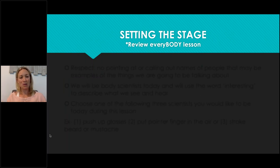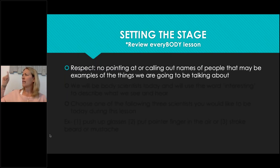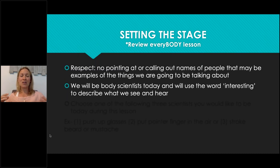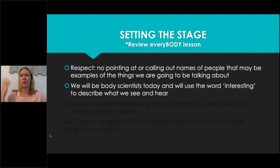You have to set the stage in your classroom. Once you start talking about certain things, especially with younger ones, they may point out peers. We want to establish that we respect everybody — no pointing, no calling out names. I also like talking to students about being 'body scientists.' We want to move away from the 'ew' reaction toward something more like 'interesting.' When one student says 'ew,' it affects everybody in the classroom, so we work to shift that response.